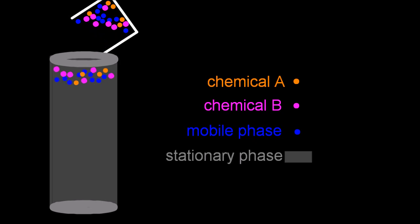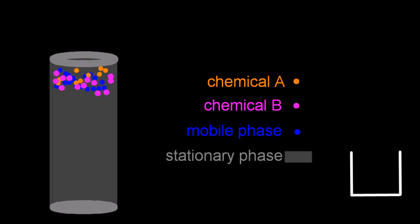So in this case, under gravity, these chemicals are going to start to move down this column. You'll notice that they're moving down the column at different rates.